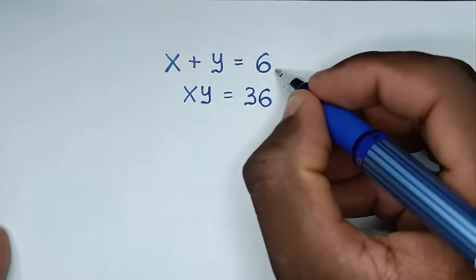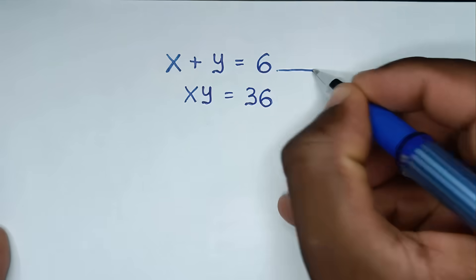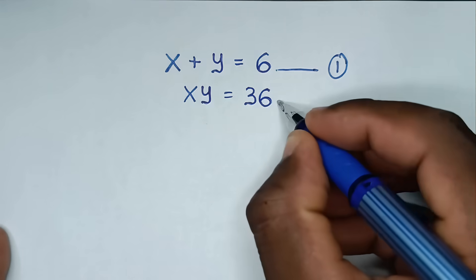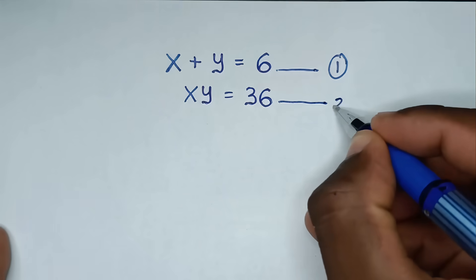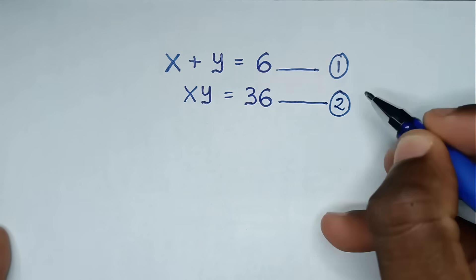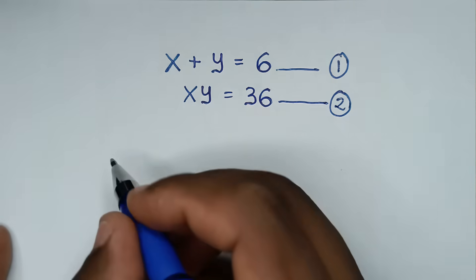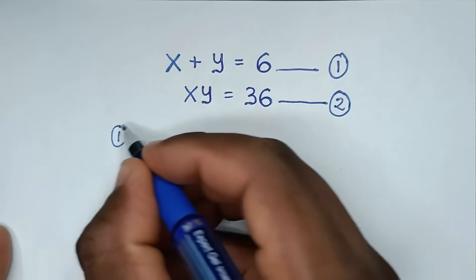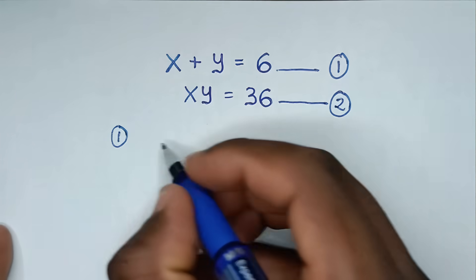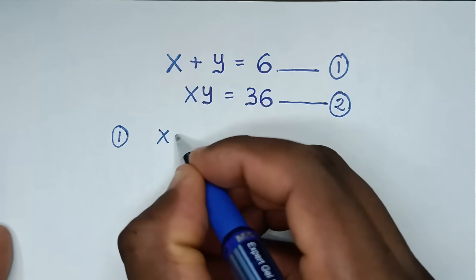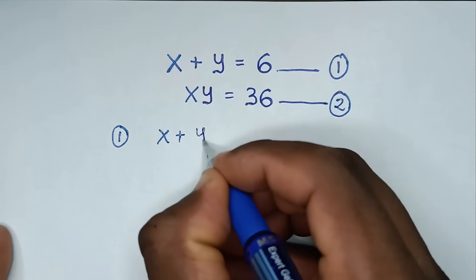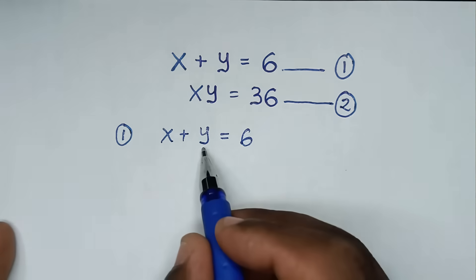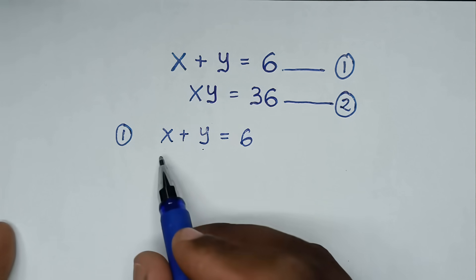Now, in the first step, we start by letting this as equation 1 and this as equation 2. Starting from equation 1, which is x plus y is equal to 6, we will make y the subject.